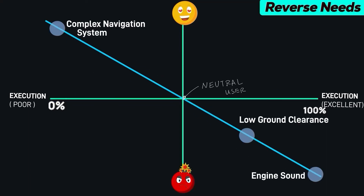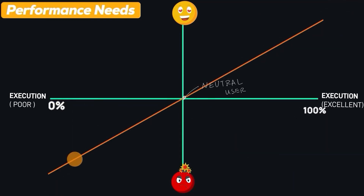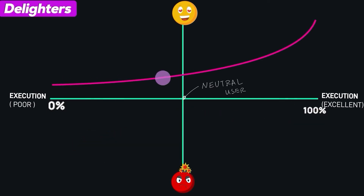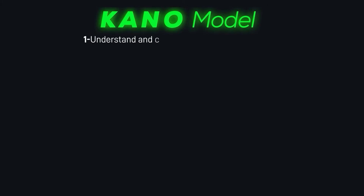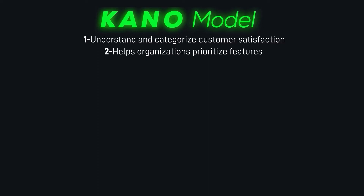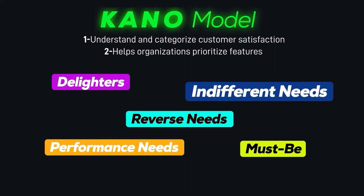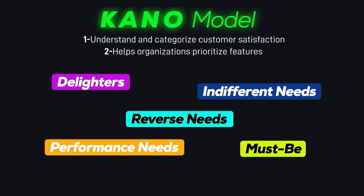If you have ever wondered how brands decide what features to focus on or drop, the Kano model has the answer. The Kano model does two things: it is used to understand and categorize customers' satisfaction in relation to product features, and it helps organizations prioritize features by analyzing how different types of requirements impact users' satisfaction. Stick around to learn how the Kano model breaks down customers' expectations and transforms product design decisions through five requirement types.